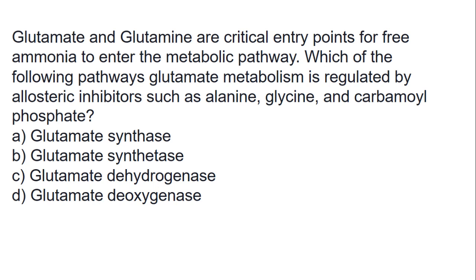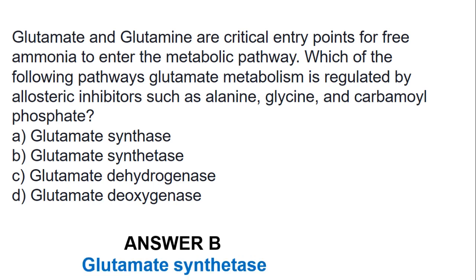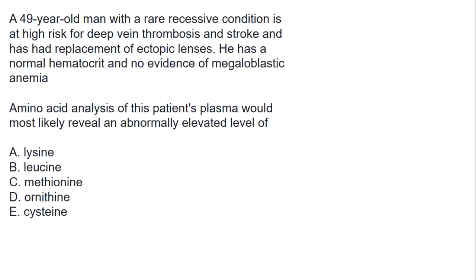Glutamate and glutamine are critical entry points for free ammonia to enter the metabolic pathway. Which of the following pathways of glutamate metabolism is regulated by allosteric inhibitors such as alanine, glycine, and carbamoyl phosphate? The answer is B, which is glutamate synthesis.